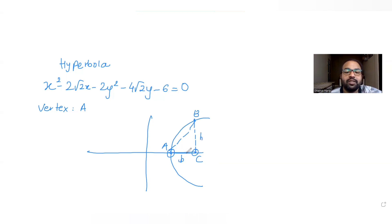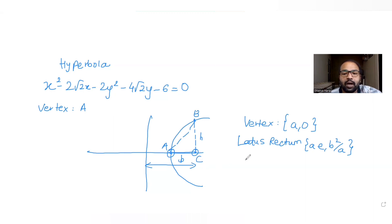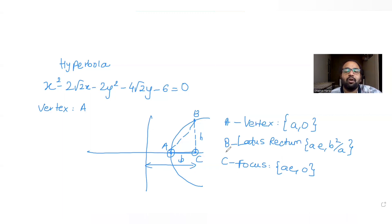We need to find the area of triangle ABC, so basically we need to find the distance AC and distance BC. The vertex of a hyperbola is given by (a, 0), one endpoint of the latus rectum is given by (ae, b²/a), and the focus is at (ae, 0). So let's find all three vertices — the latus rectum endpoint and focus — and then find the area of this triangle.